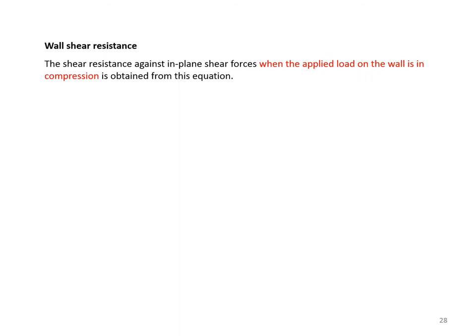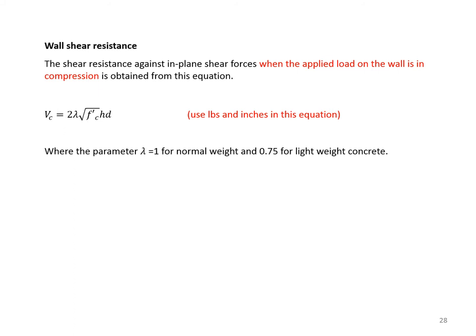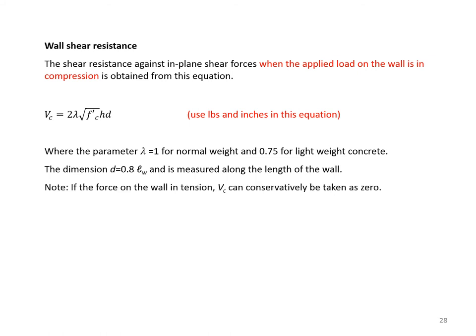Wall shear resistance: the shear resistance against in-plane shear forces when the applied load is in compression is Vc = 2λ√f'c · h · d (in pounds and inches), where λ = 1.0 for normal weight and 0.75 for lightweight concrete, d = 0.8LW measured along the length of the wall, and h is the wall thickness.